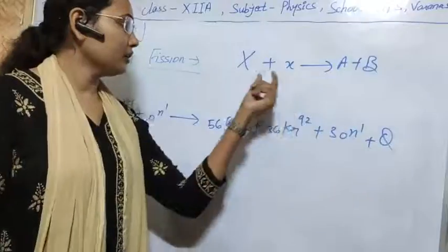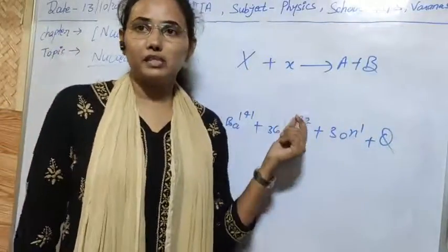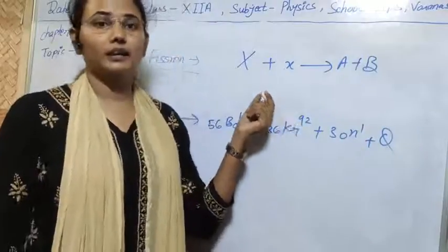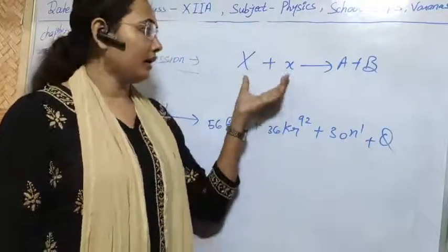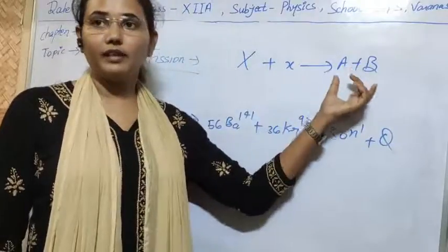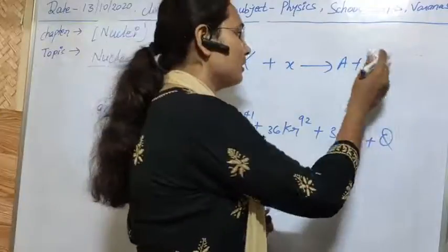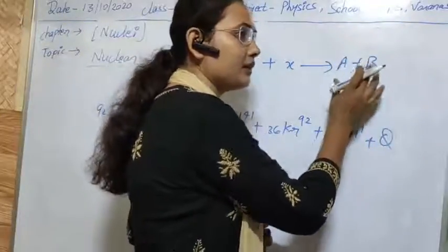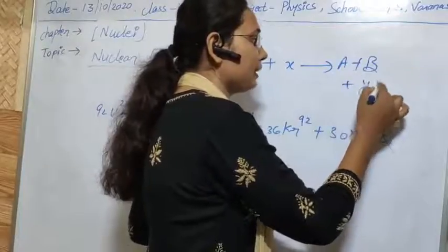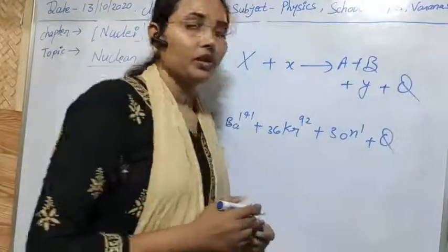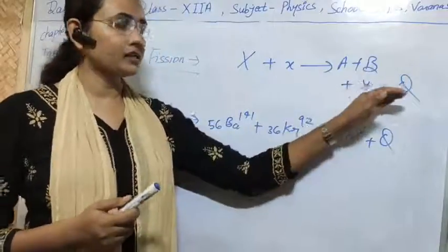If a nucleus of any atom is bombarded by a high-velocity particle and its bond energy breaks down, it can split into two or more parts. In the splitting of the nucleus there can be emission of other particles and some energy. So in every nuclear reaction, we always get some energy.